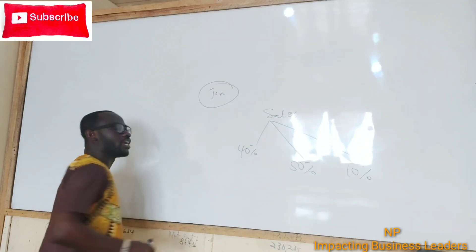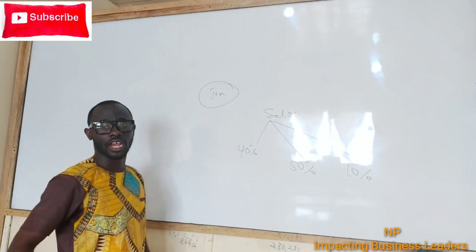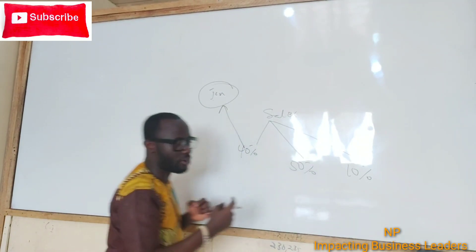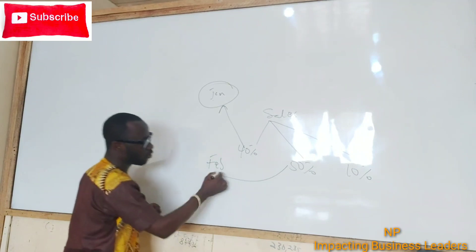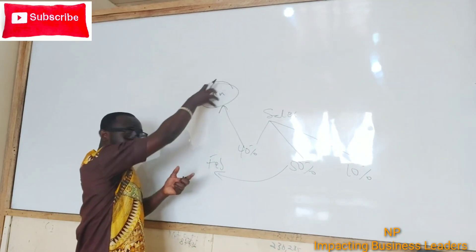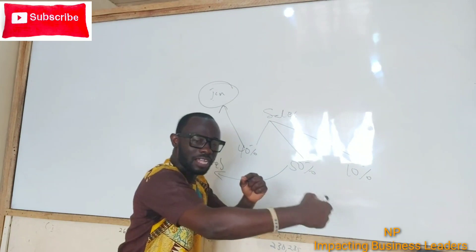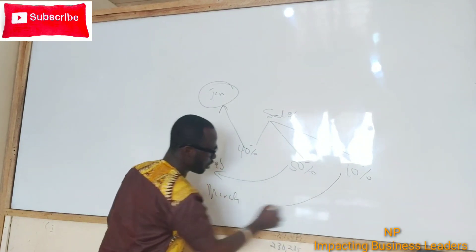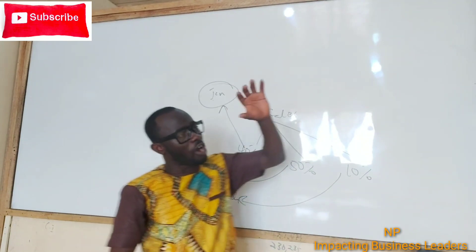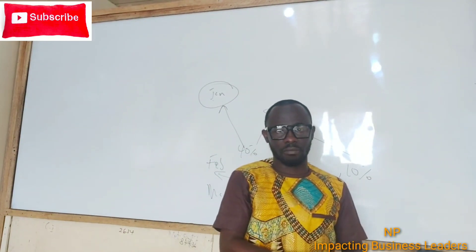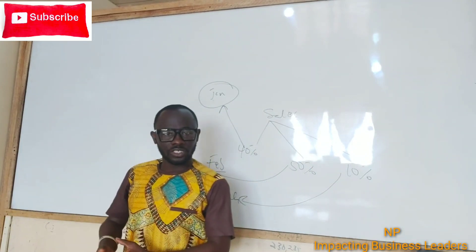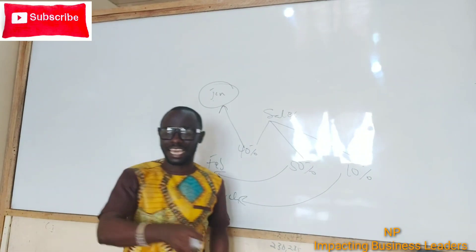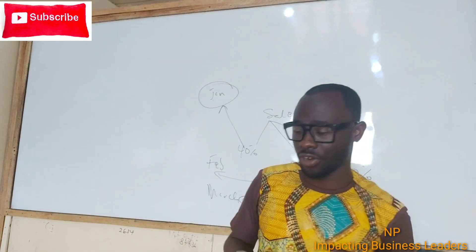For example, when we sell in January, in January we receive 40% of those sales. Then the month after January — which is February — we receive 50% of that same January sales. Then the second month after the sales — which is March — we receive the remaining 10%. So for every month's sales, we receive 40% in the month of sales, 50% in the month after, and 10% in the second month after.